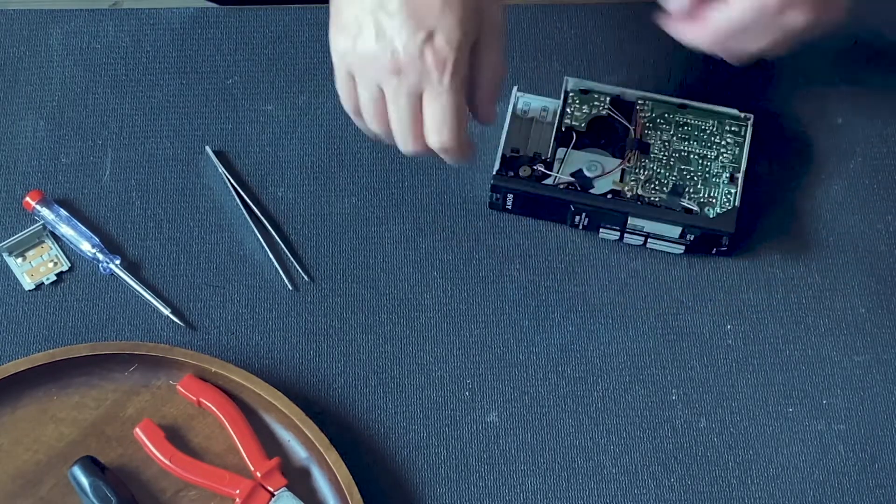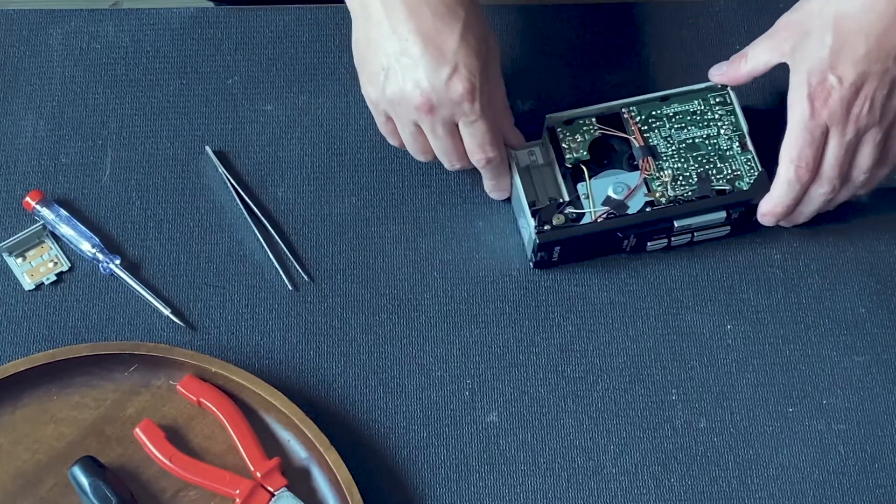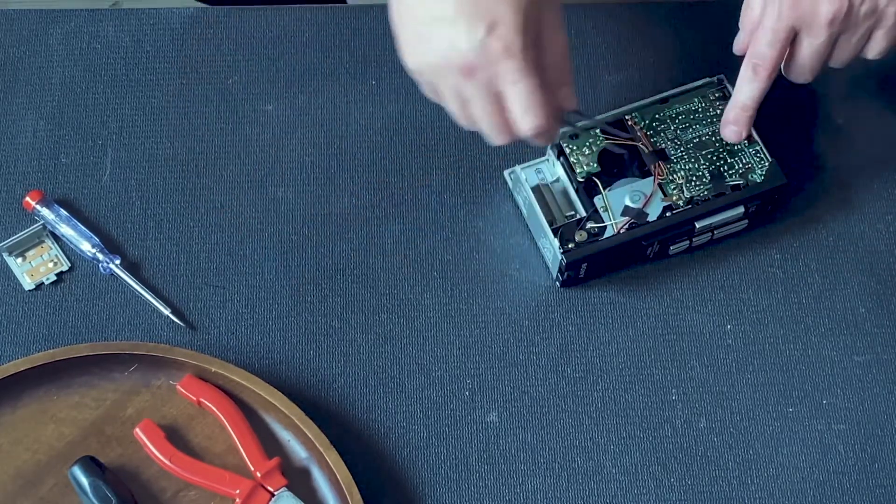Step 4: You'll see some tape holding wires to the circuit board. Carefully remove these tapes. We recommend cutting new pieces for reassembly later.